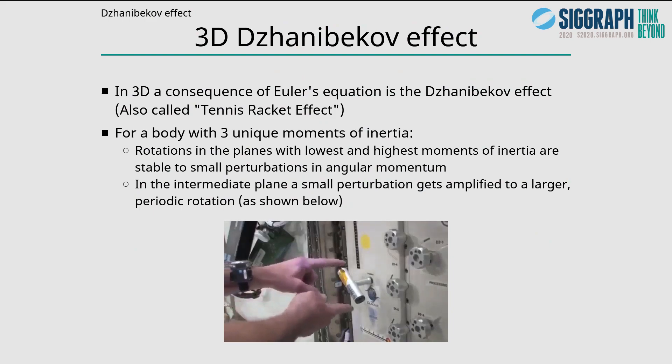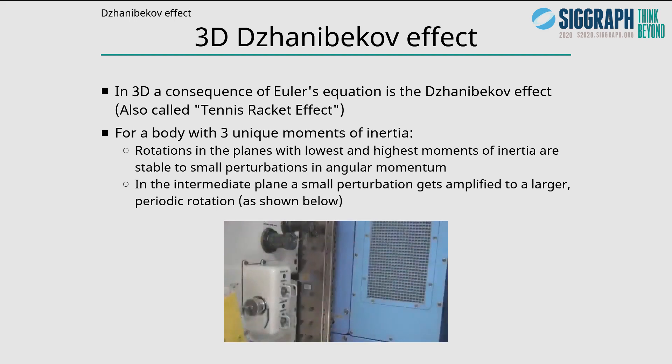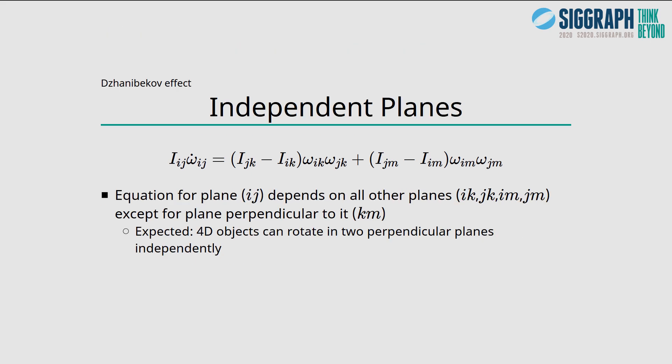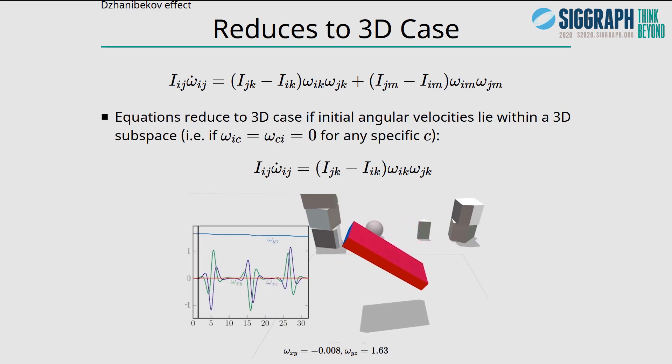Looking at Euler's equation in more detail, there is the Dzhanibekov or tennis racket effect where for a body with three unique moments of inertia, rotations in the planes with lowest and highest moments are stable to small perturbations in angular momentum. But in the intermediate plane, a small perturbation gets amplified to a larger periodic rotation. What happens in 4D? In 4D, the equation becomes the following. We can note the presence of a sum. Unlike in 3D, the conditions for 4D rotational stability cannot be definitely stated based solely on having distinct principal moments of inertia. We notice that the equation for a specific plane depends on all other planes except for the plane perpendicular to it, which is expected since a 4D object can rotate in two perpendicular planes independently. Also the equation reduces to the 3D case if the angular velocities do not involve the fourth axis.